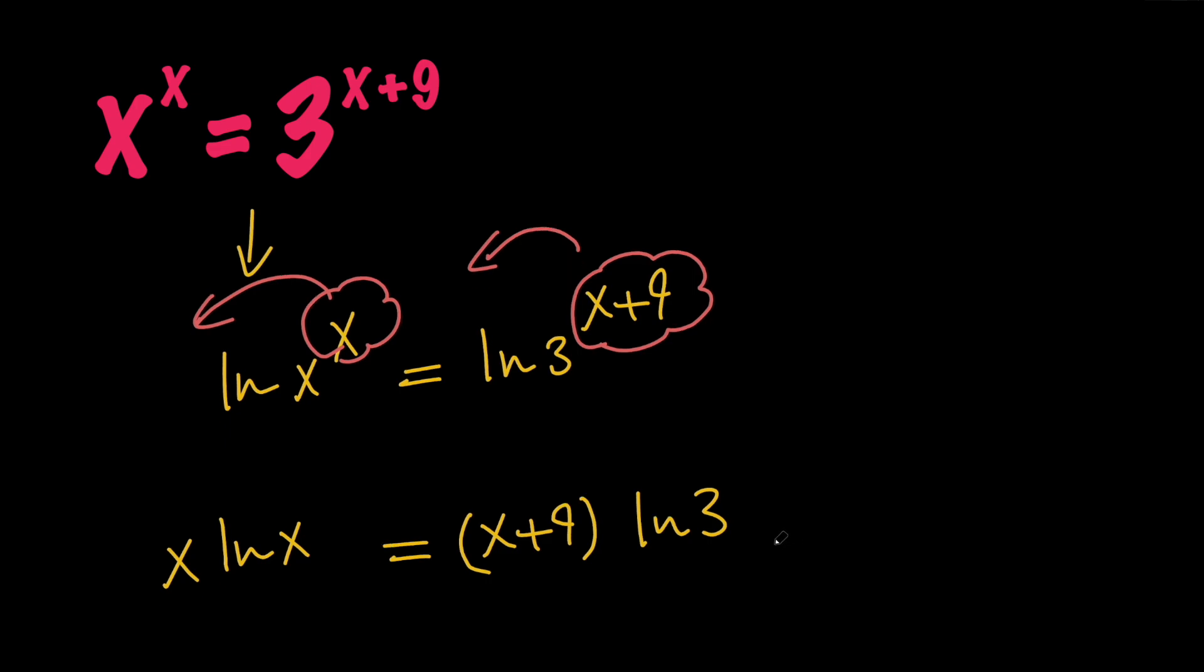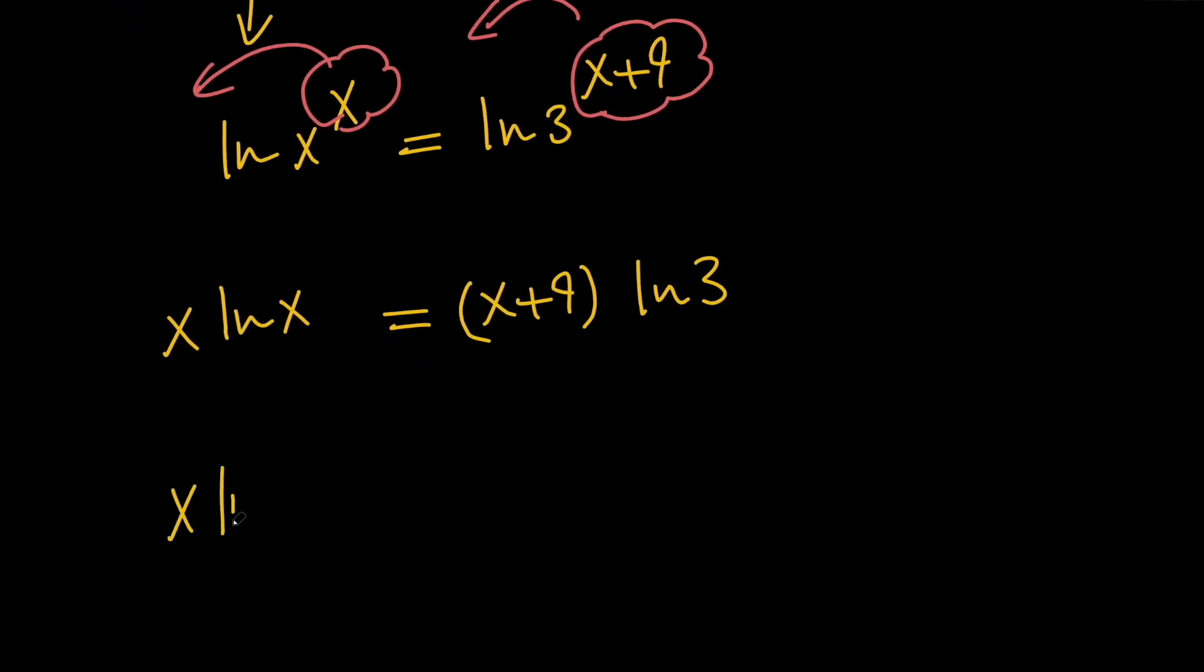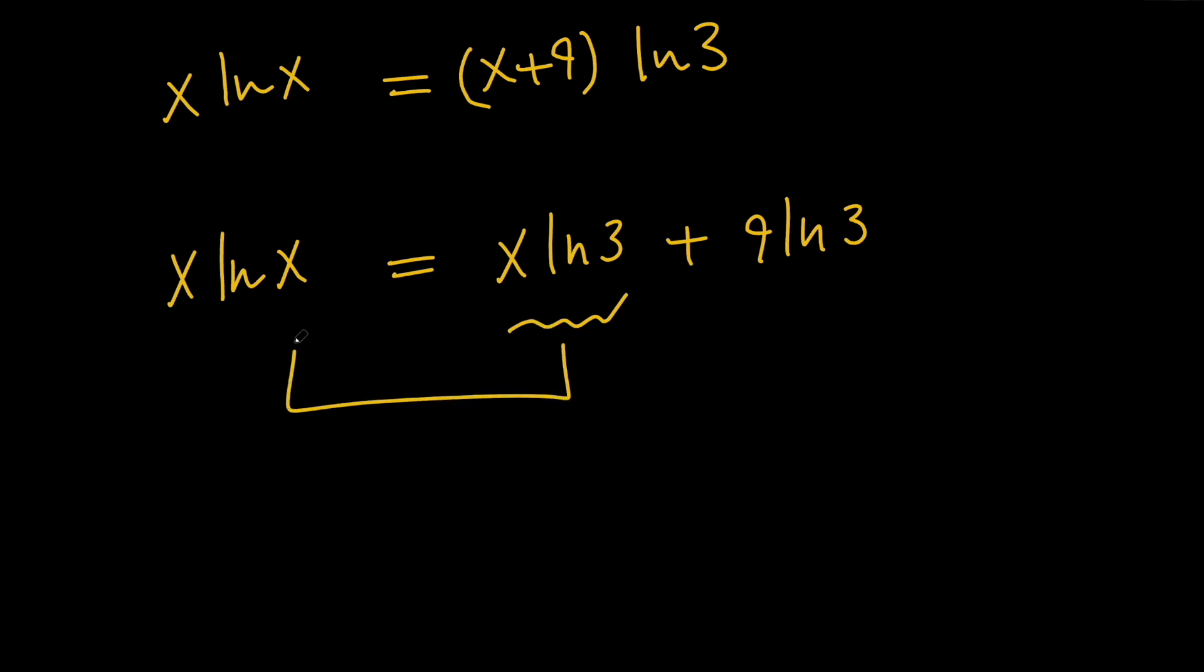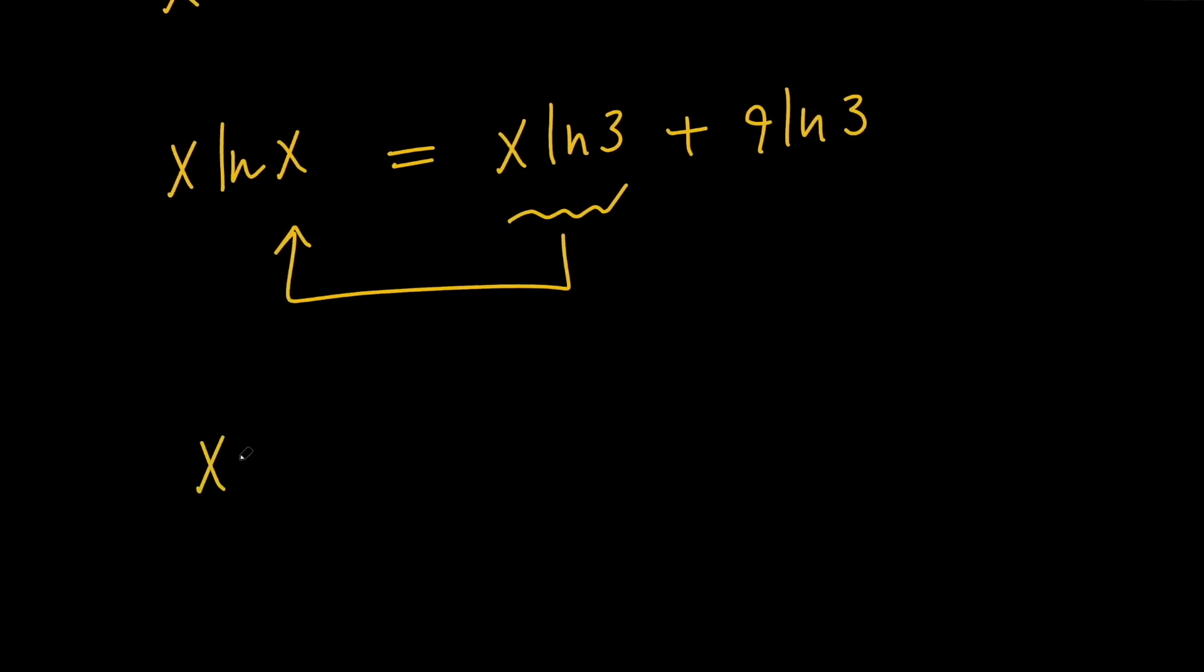Next, if we expand the right hand side, we're going to have x lnx equals x ln 3 plus 9 times ln 3. Then, in order to put the x's together, let's go ahead and move this to the left hand side to get x lnx minus x ln 3 equals 9 ln 3.